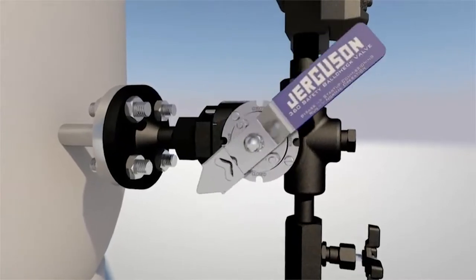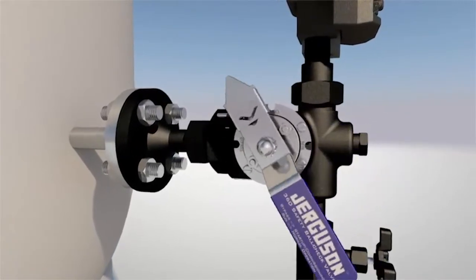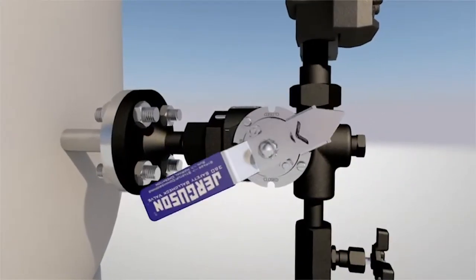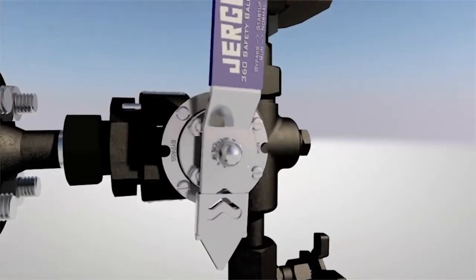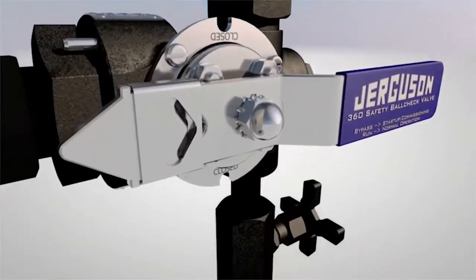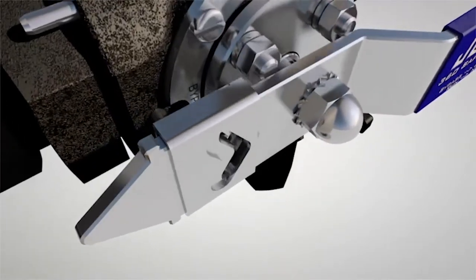The patented ball check design provides clear status with its quarter turn position visible handle. This unique handle design points to the mode of operation and is complete with locking pin to secure its position.